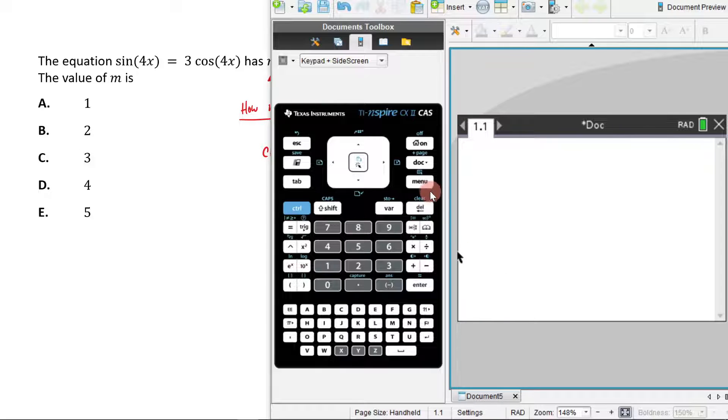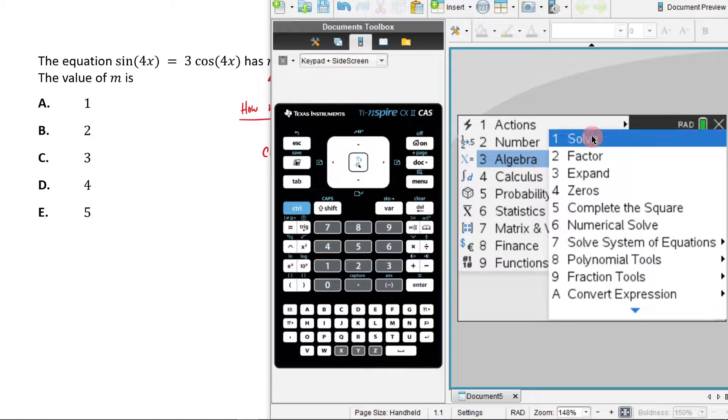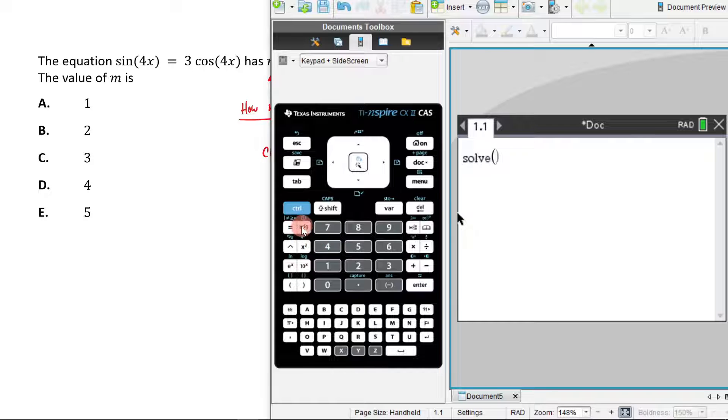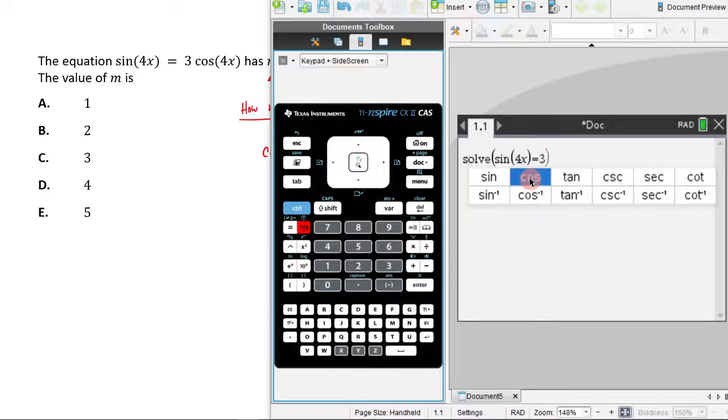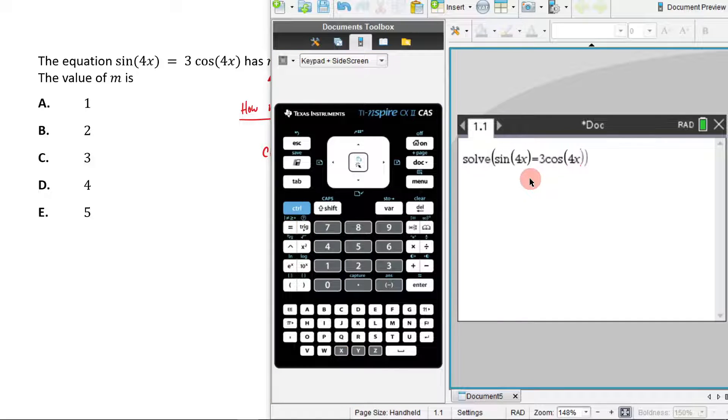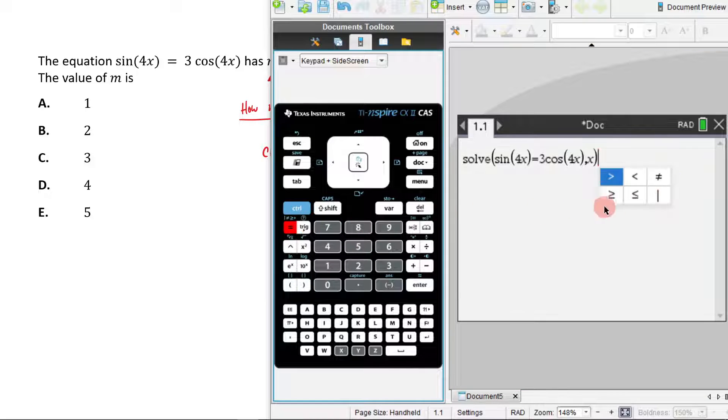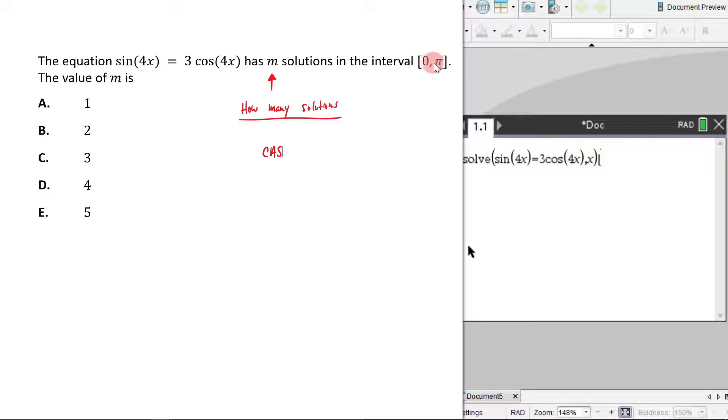I'm going to go to menu, algebra, solve, and then I'm going to go trig sin(4x) equals 3. Then I'm going to go trig cos(4x), and then after I've done that, I'm going to go comma x. Then I have to control this such that now I have to specify the domain for it.